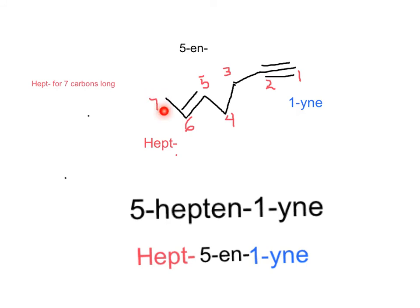This is one more example, in which we see that the carbon-carbon triple bond takes the smallest number because it's closer to an end. Carbon-carbon double bond is between carbon 5 and 6. When it's time to place the family name,